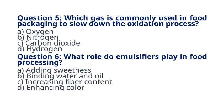Question 6. What role do emulsifiers play in food processing? A. Adding Sweetness B. Binding Water and Oil C. Increasing Fiber Content D. Enhancing Color. The correct answer to question 6 is option B. Binding Water and Oil. Explanation: emulsifiers help create stable mixtures of water and oil in food products, preventing separation and improving texture.